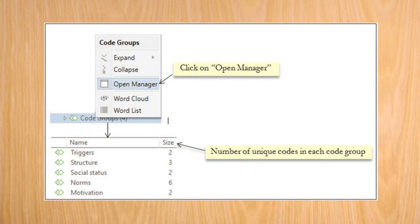Perhaps the most salient advantage of code groups is that they can act as a step towards abstraction from raw data. Remember that we started out with a text document which captured a developer's responses about participating in an open source software project. From there, we have now identified several codes and a smaller set of code groups such as norms, structure, social status, triggers and motivation. Thus, you can see how more abstract concepts are slowly emerging from the raw interview transcript.